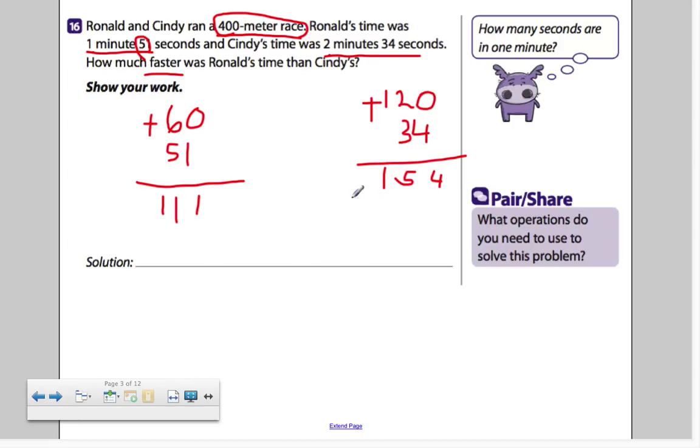Now we can finally find out who's faster. You do that by subtracting their times. 154 minus 111. 4 minus 1 is 3. 5 minus 1 is 4. 1 minus 1 is nothing. How much faster was Ronald's time? Ronald's time was faster by 43 seconds.